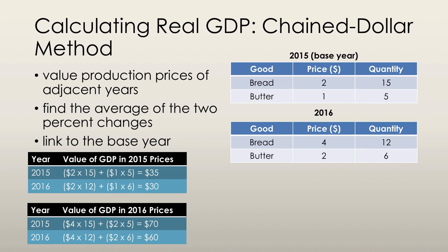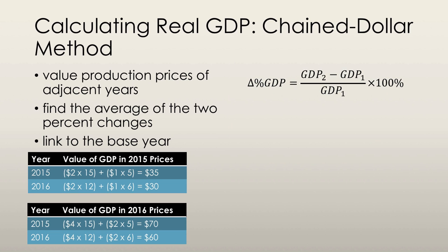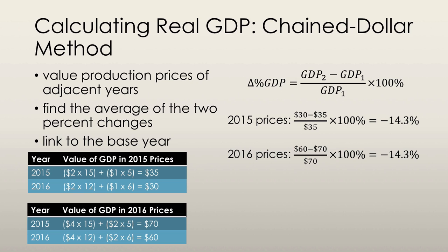Now that we've calculated all these numbers, we find the average of the percent changes from the value of GDP in 2015 prices and the value of GDP in 2016 prices. The percent change formula is: take the GDP of the second year, subtract the GDP of the first year, divide by the GDP of the first year, and multiply by 100. For 2015 prices: $30 (2016 quantities at 2015 prices) minus $35 (2015 quantities at 2015 prices), divided by $35, times 100 — giving a decrease of 14.3%. The percent change for 2016 prices is also 14.3%, so the average is negative 14.3%.